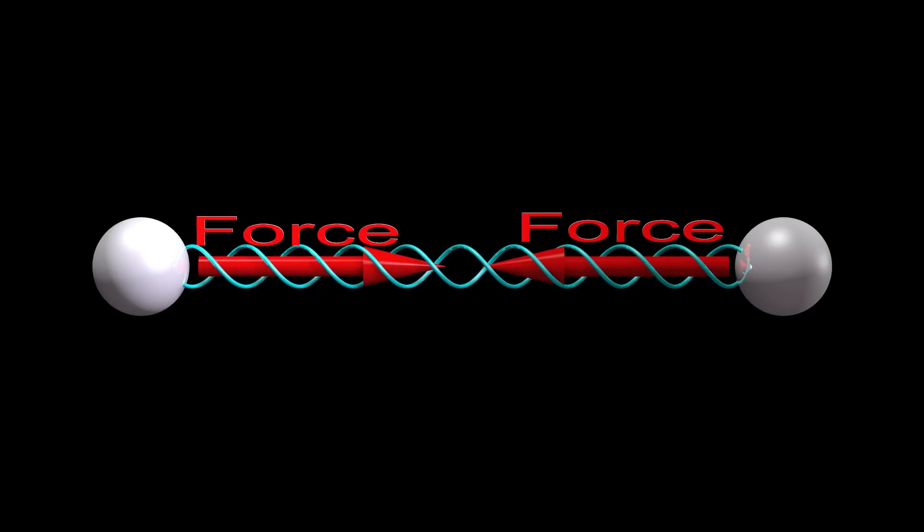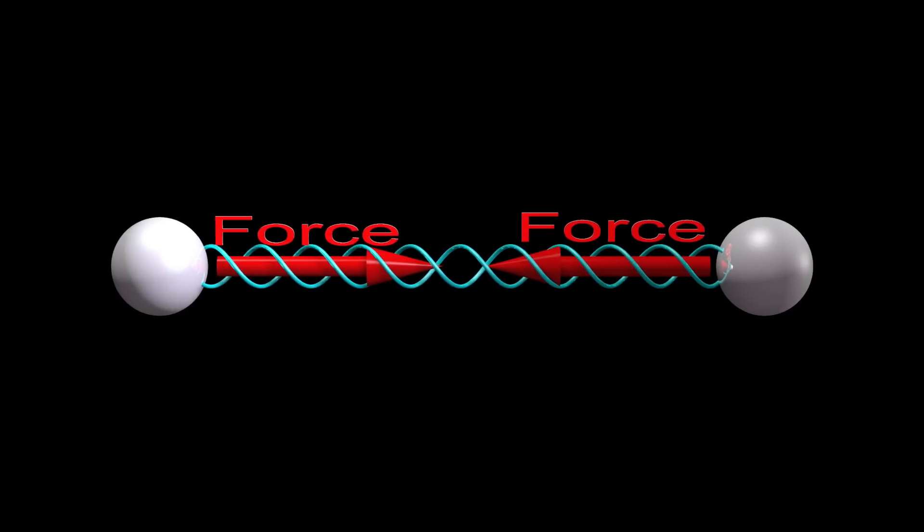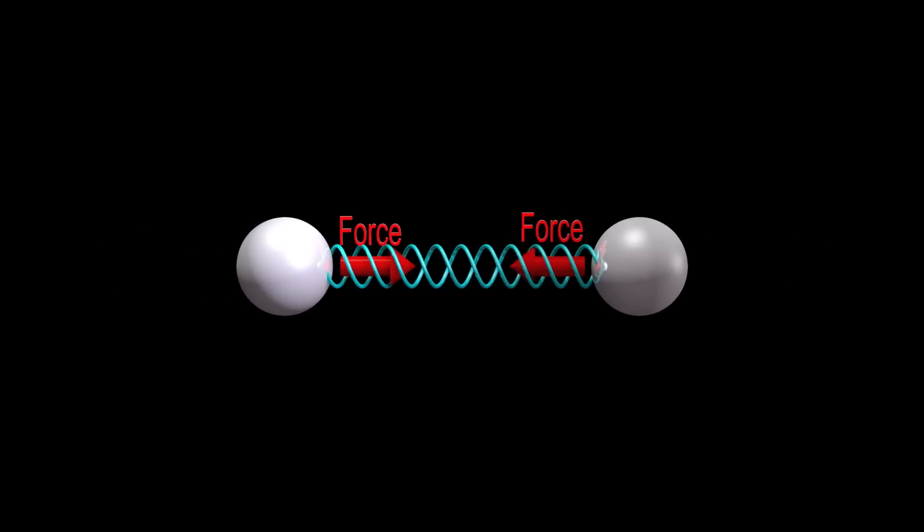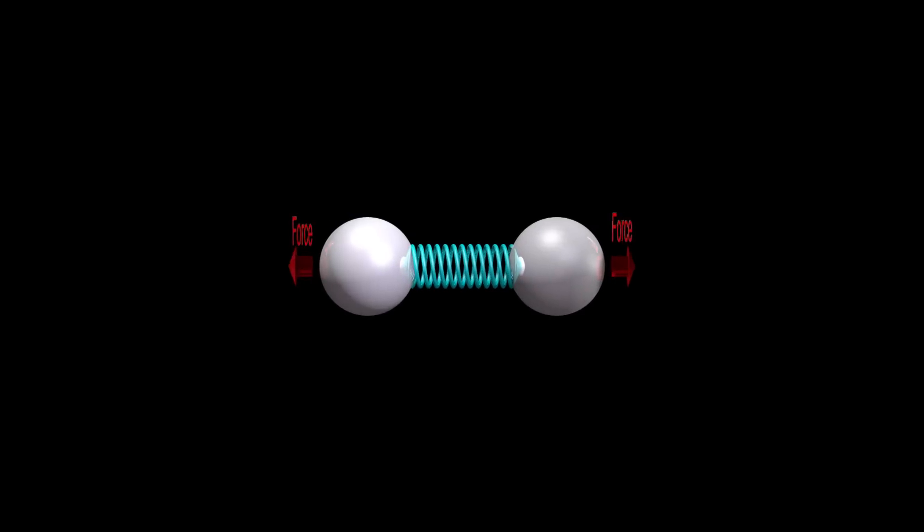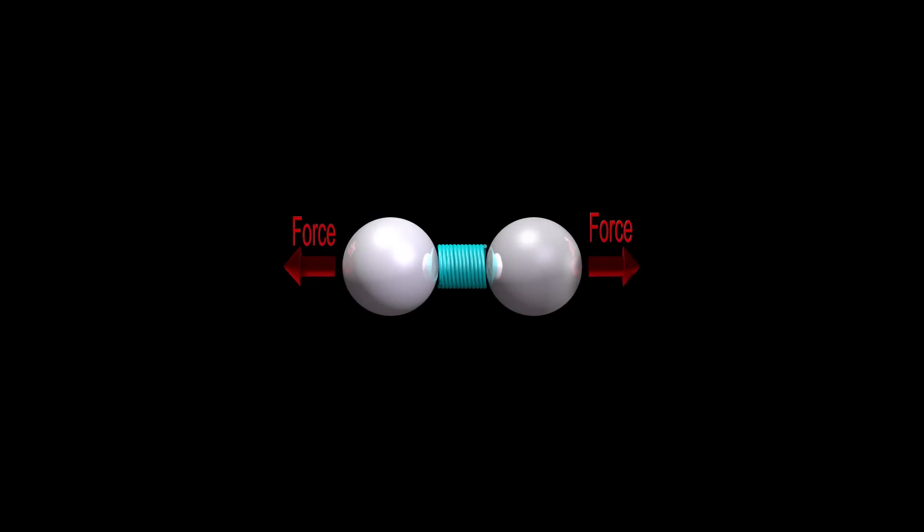The forces that two neighboring spheres exert on each other always lie along the line joining the two spheres. This is the strong version of Newton's third law of motion.